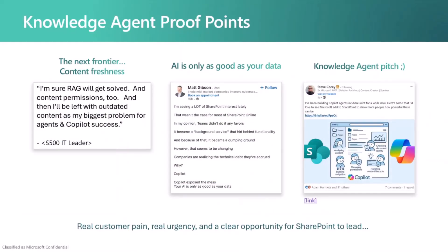I want to chat about the proof points. We just released the Knowledge Agent about 11 days ago, but we've had signal for quite some time. Content freshness is the next frontier — AI is only as good as your data. Outdated content becomes a silent blocker, undermining trust and reducing relevance, ultimately limiting the effectiveness of AI. That's where the Knowledge Agent steps in. It's not just nice to have — we really see it as a strategic necessity in the era of AI. The agent can help you proactively curate, enrich, and maintain your content so that Copilot will have timely and trustworthy responses.